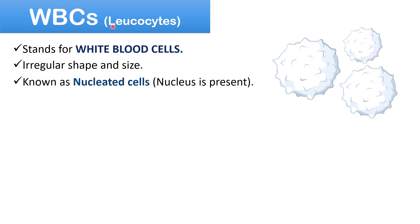WBC stands for white blood cells. These cells are also known as leukocytes. WBCs are irregular in shape and size and are known as nucleated cells because of the presence of a nucleus. On the basis of the presence of granules, WBCs are divided into two subcategories: granulocytes and agranulocytes.